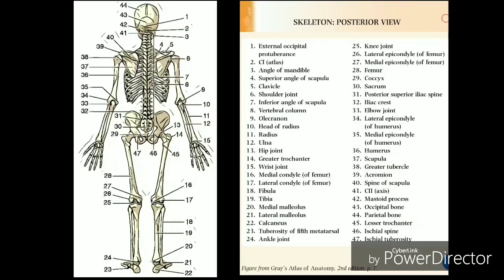Lateral condyle of femur, round protuberance of the lower terminal part of the femur enabling articulation with the tibia. Medial condyle of femur, round protuberance of the lower terminal part of the femur enabling articulation with the tibia. This condyle is longer and narrower than the lateral condyle.